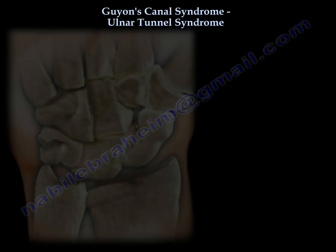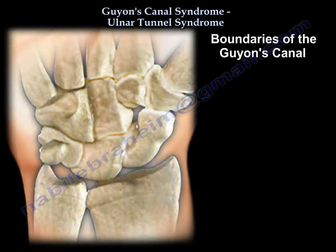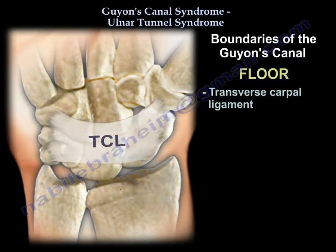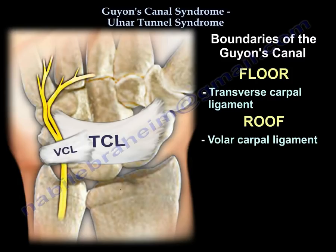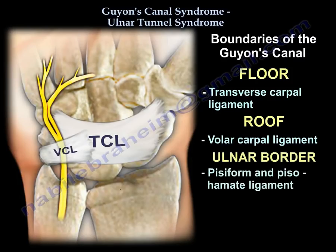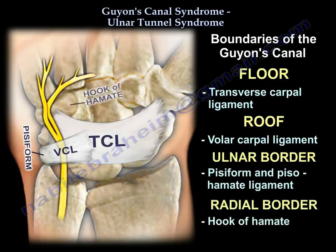What are the boundaries of Guyon's Canal? The floor is the transverse carpal ligament. The roof is the volar carpal ligament. The ulnar border is the pisiform and pisihamate ligament, and the radial border is the hook of the hamate.